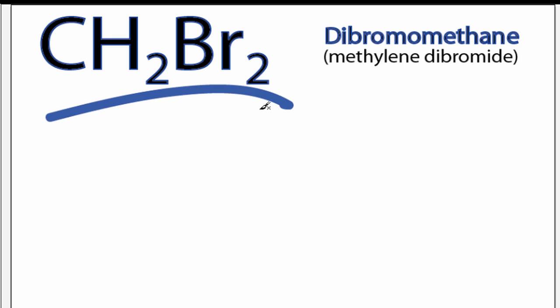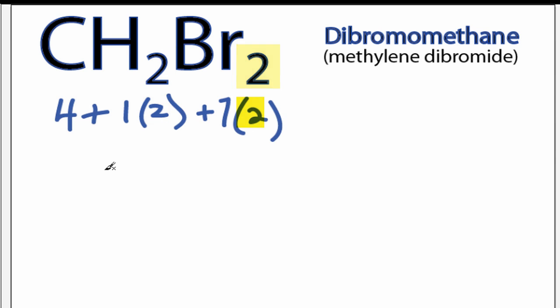For the CH2Br2 Lewis structure, carbon has four valence electrons. Hydrogen has one, but we have two hydrogens. Bromine has seven, but we have two bromines. Add it all up, we have 20 valence electrons for the CH2Br2 Lewis structure.